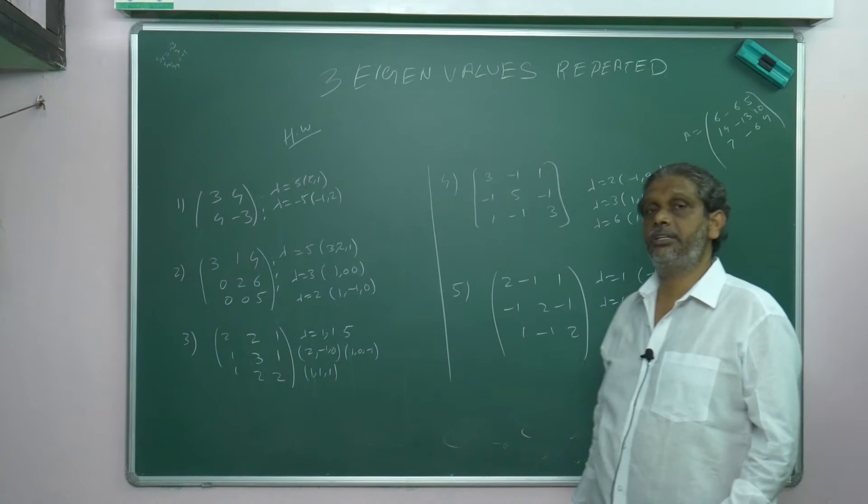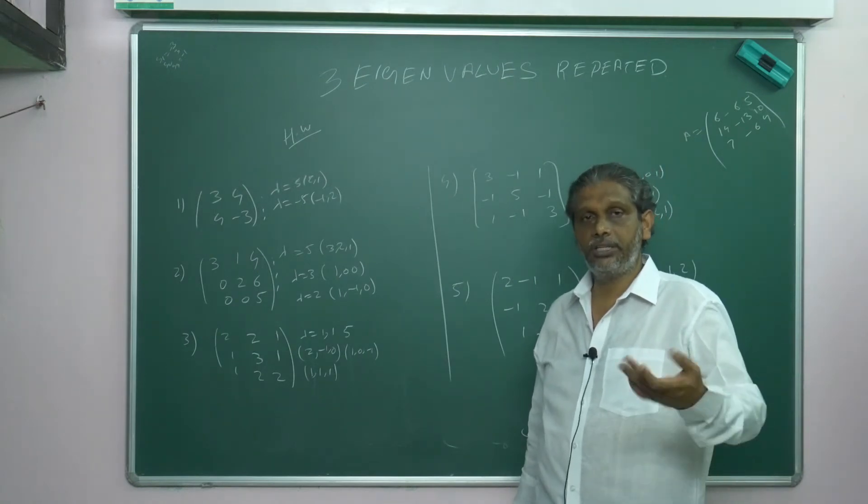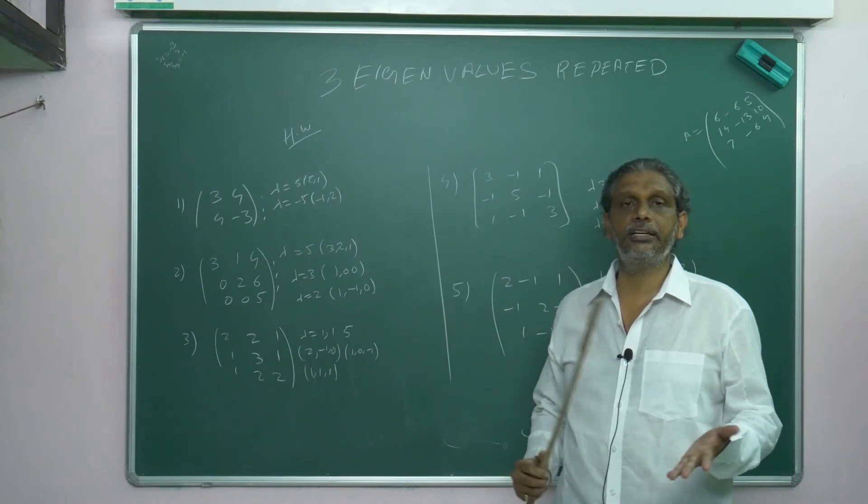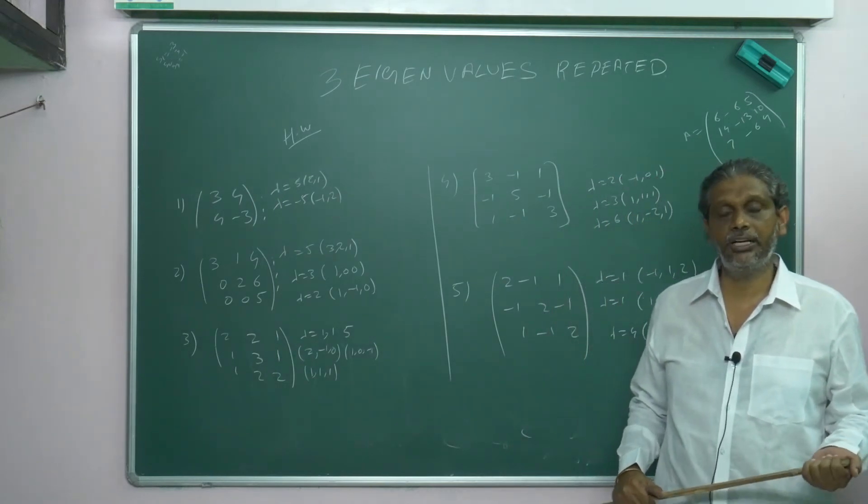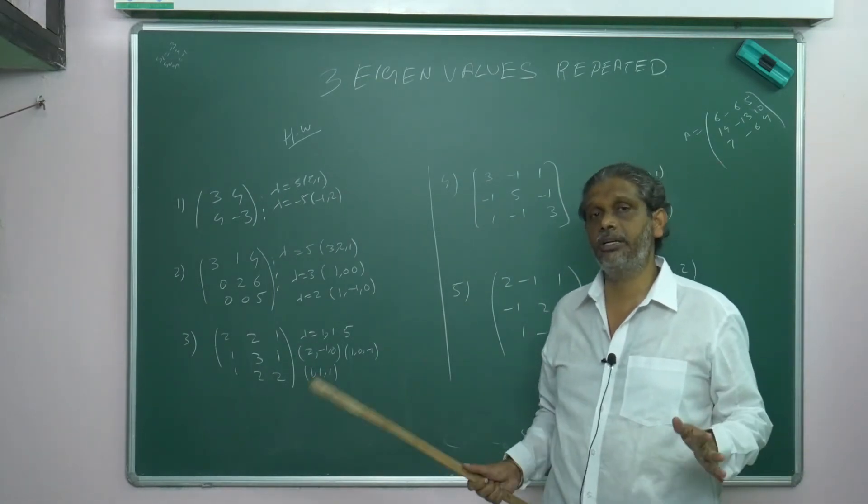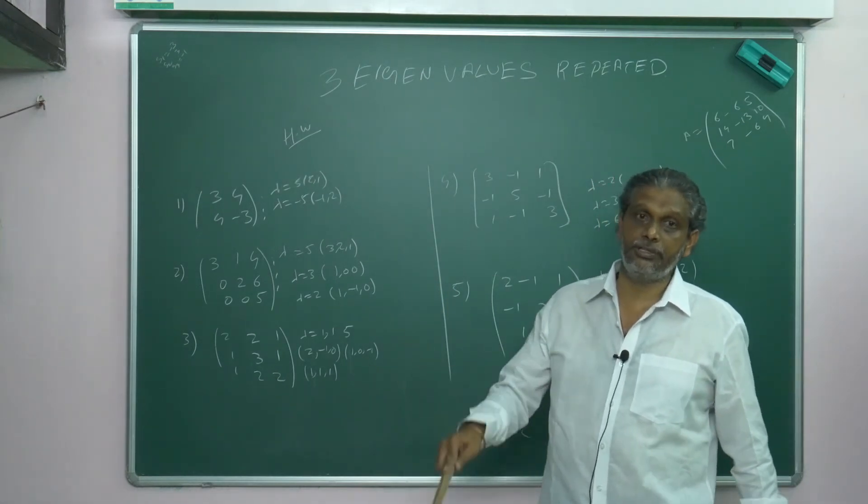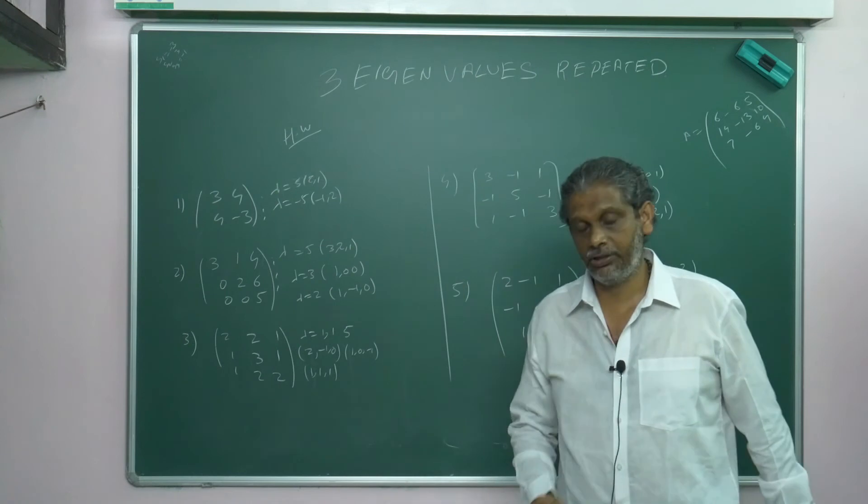You don't worry about what is symmetric and what is non-symmetric. If the given problem is, you can attack using this method. First, you can find the characteristic equation. Once you find eigenvalues, find eigenvectors—whatever matrix, that is the procedure. You don't worry about whether the matrix is symmetric. Non-symmetric means what? You don't worry about it.